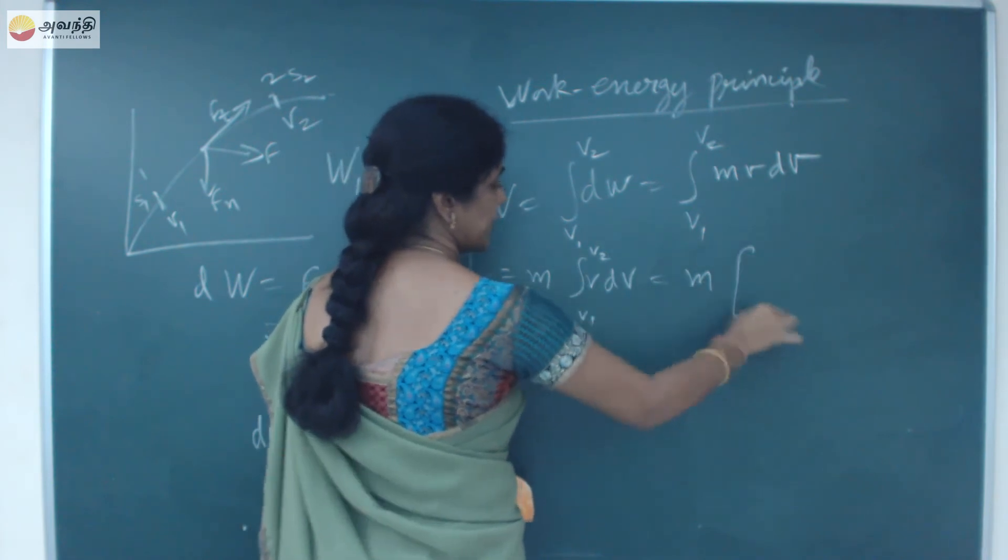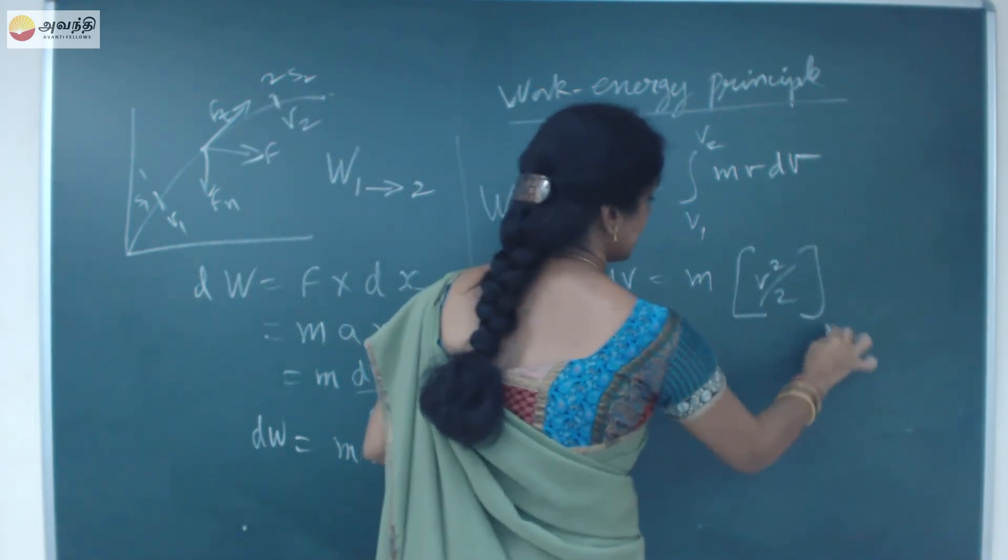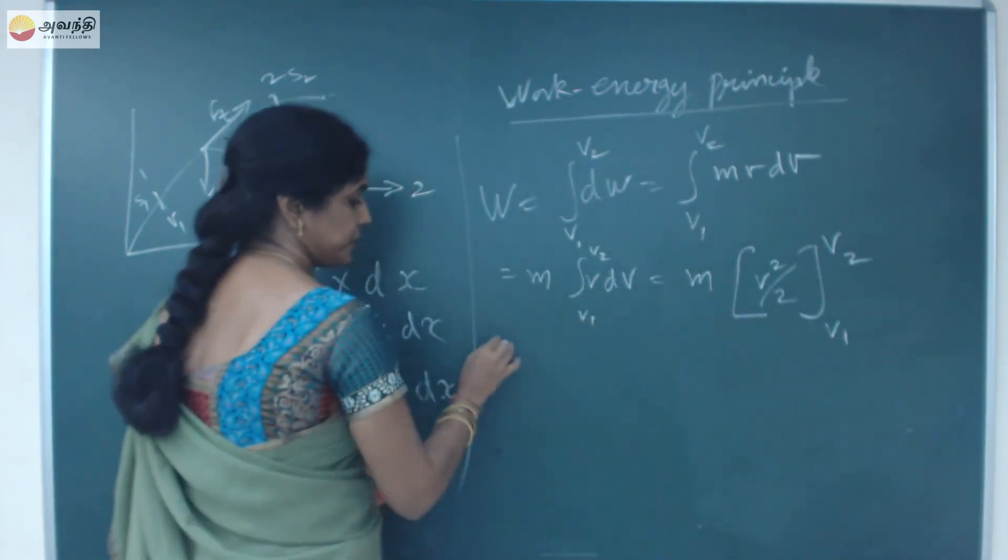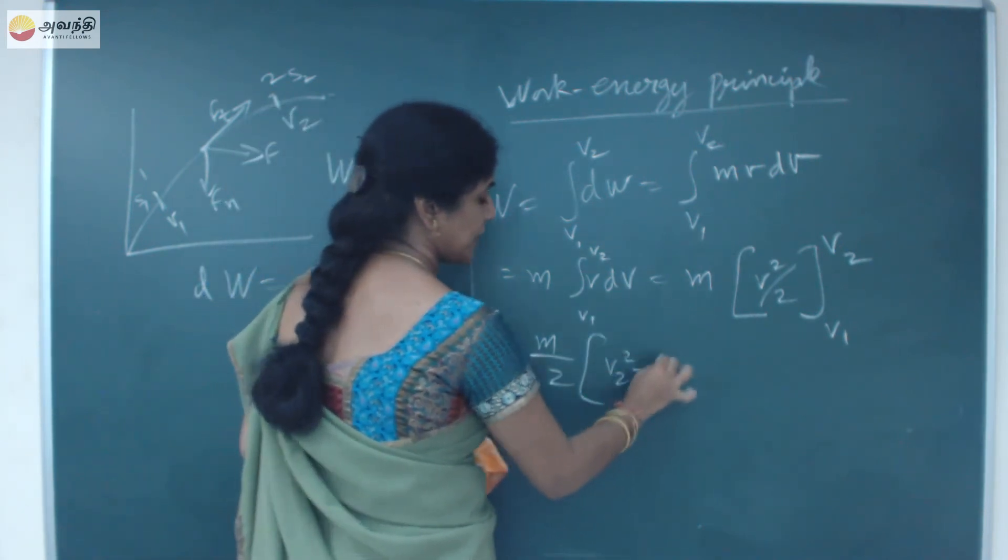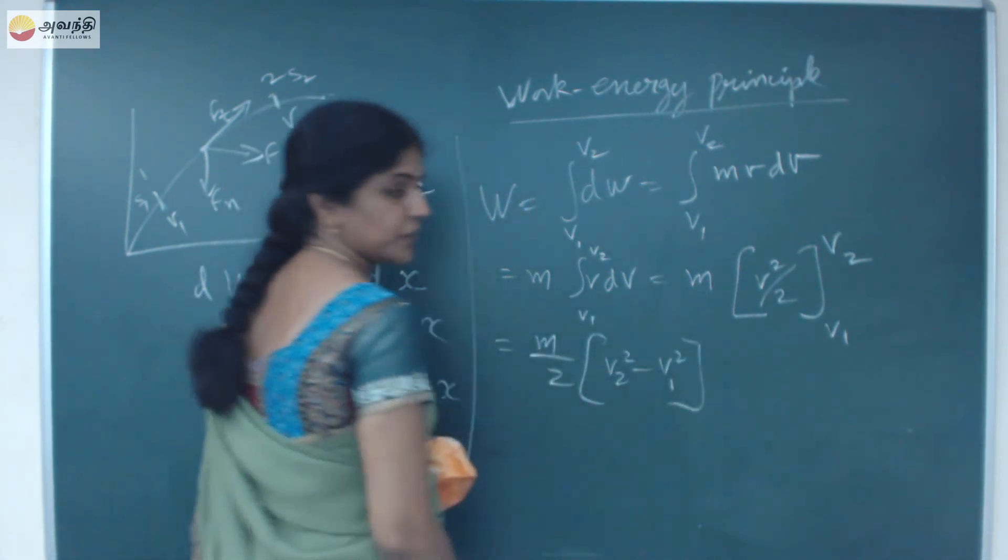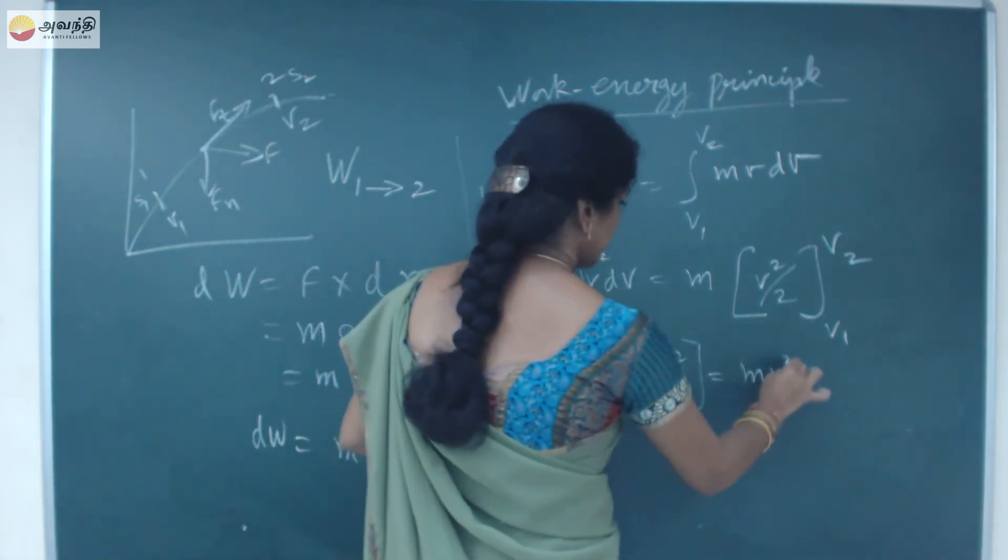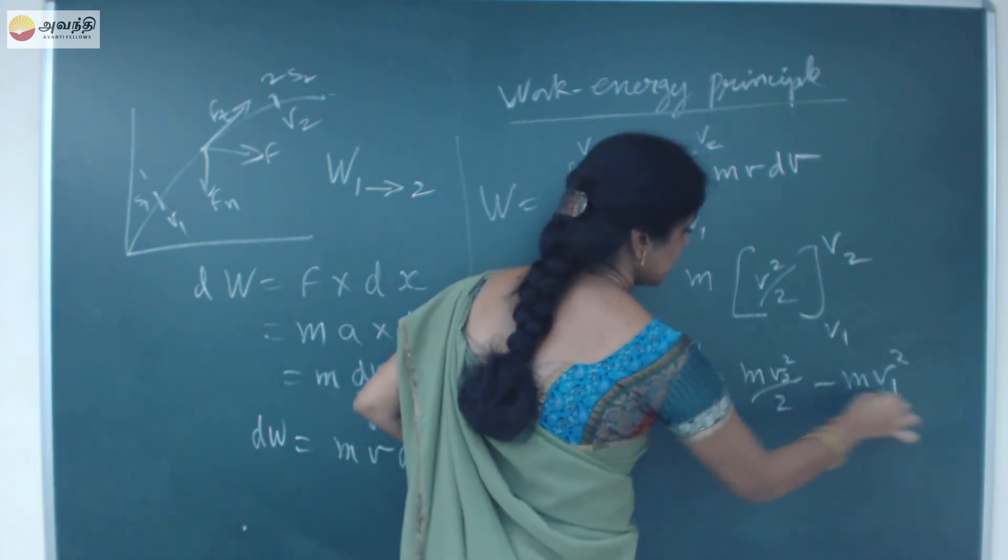If I integrate this vdv, I will be getting v square by 2 between the limits v1 to v2. That is m by 2, v2 square minus v1 square. I can write this as mv2 square by 2 minus mv1 square by 2.